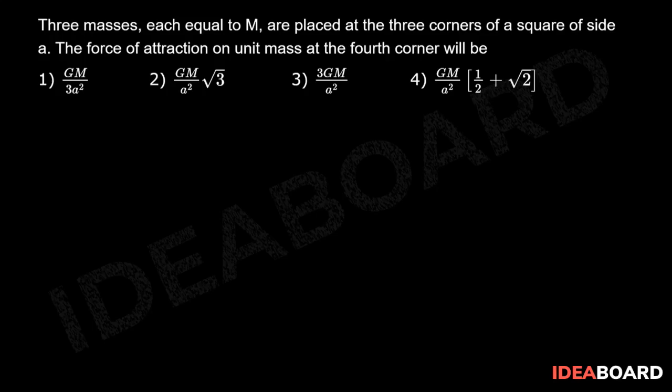Now as per the given question, three masses all are equal. They are kept at the three corners of the square. This is mass M, this is mass M, this is mass M. The square side is A. Now this is the fourth corner. The force of attraction on unit mass, unit mass means M is equal to one, at the fourth corner will be.